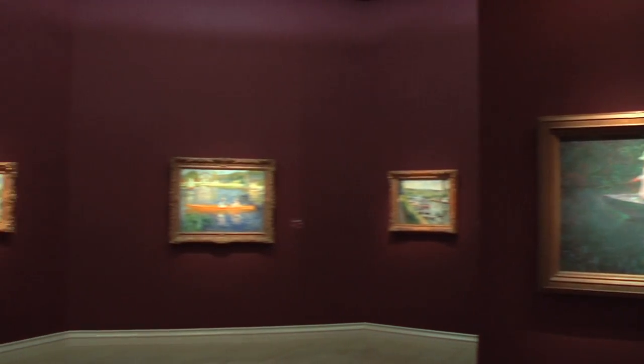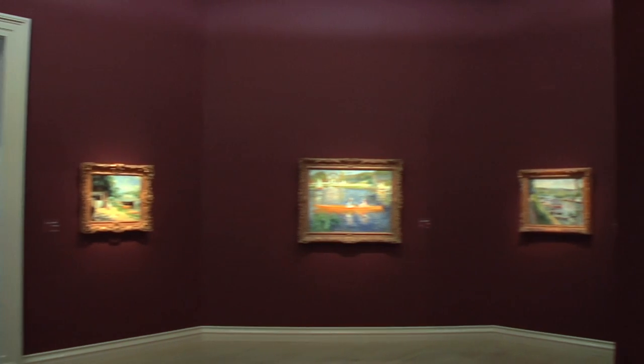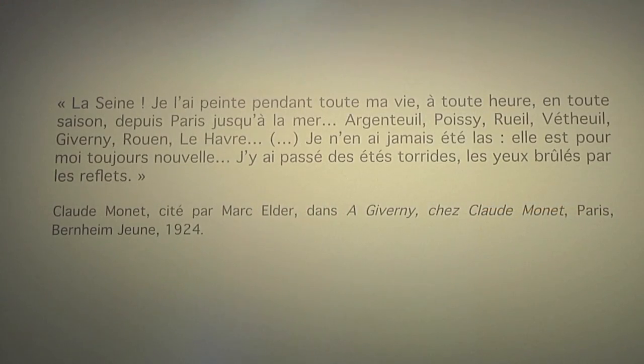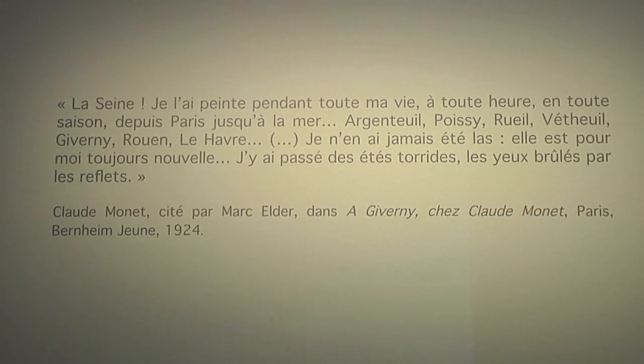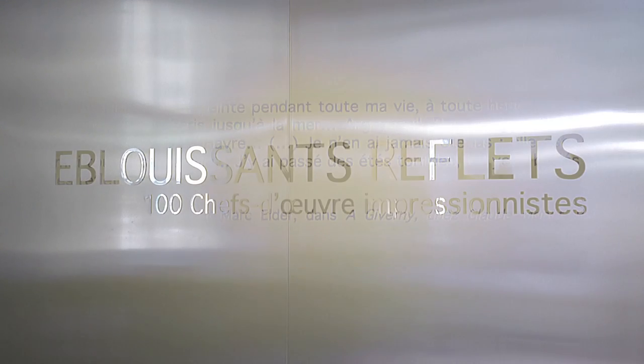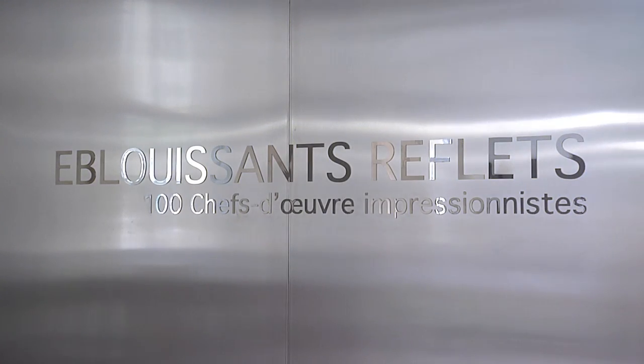Monet dit : la Seine, je l'ai peint en toute saison, l'été, l'automne et l'hiver, les yeux brûlés par les reflets. D'où l'idée de ce mot d'éblouis sans reflet, comme si le peintre perdait la vue environnée de ses mille reflets scintillants.